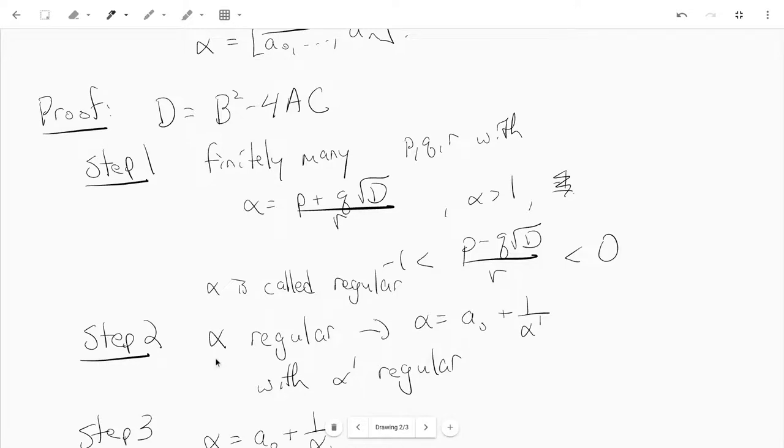The second step is to prove that if alpha is regular, and you expand alpha as a zero plus one over alpha prime, then alpha prime is also regular, it also satisfies this inequality.